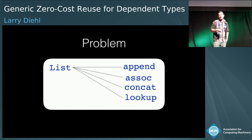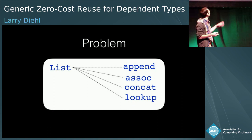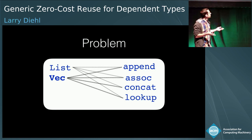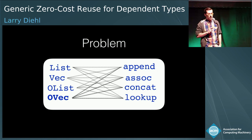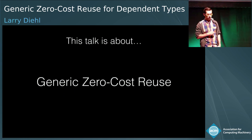In dependently typed languages, you often run into the problem where you might define a non-indexed data type like list and then define a bunch of functions and proofs about it. And then you might define an indexed variant like vector of essentially the same type, and then need to redefine all your definitions all over again, even though they're essentially the same as the originals. This process can continue—ordered lists, ordered vectors, and so on. This is a problem with code reuse: once we've defined these functions and proofs for one variant, we should be able to derive them for the others.